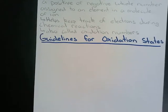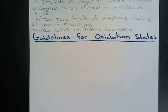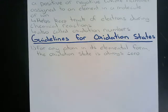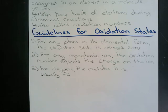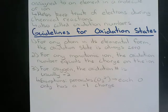For an atom in its elemental form, the oxidation number is always zero. For any monoatomic ion, the oxidation number equals the charge on the ion — positive for metals, negative for nonmetals. For oxygen, the oxidation number is usually negative two. The exception is peroxides (O2 2−), where each oxygen only has a negative one charge. For hydrogen, it has an oxidation number of +1 when bonded to nonmetals and −1 when bonded to metals.